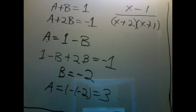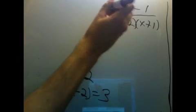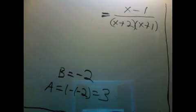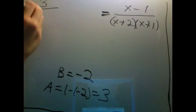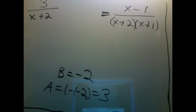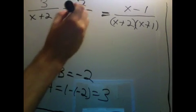And so that's pretty nice. It solves it. a has to be 3, and b has to be negative 2. So this says the thing we started with is equal to 3 divided by x plus 2 minus 2 over x plus 1.